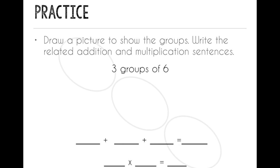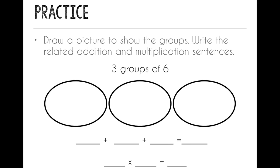Your first step is to draw three groups. And since it's three groups of six, we want to put three circles with six things inside each. So I put six dots in my first group, six dots in my second group, and six dots in my third group. For my repeated addition sentence, I'm going to write the number in each group, six plus six plus six, and then I can add it up, and I get a sum of 18.